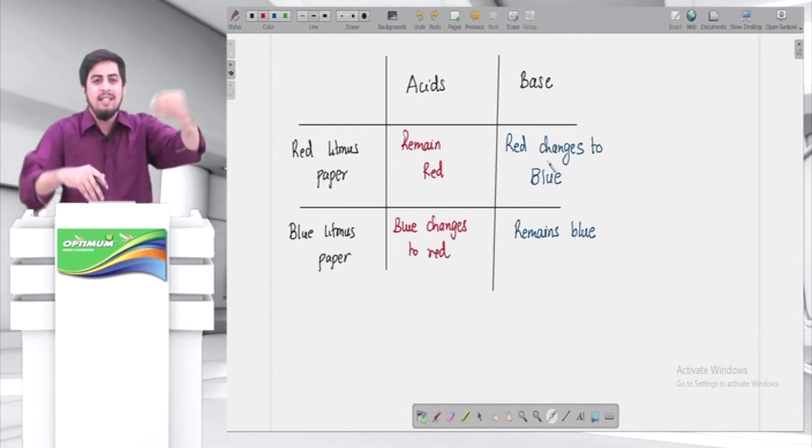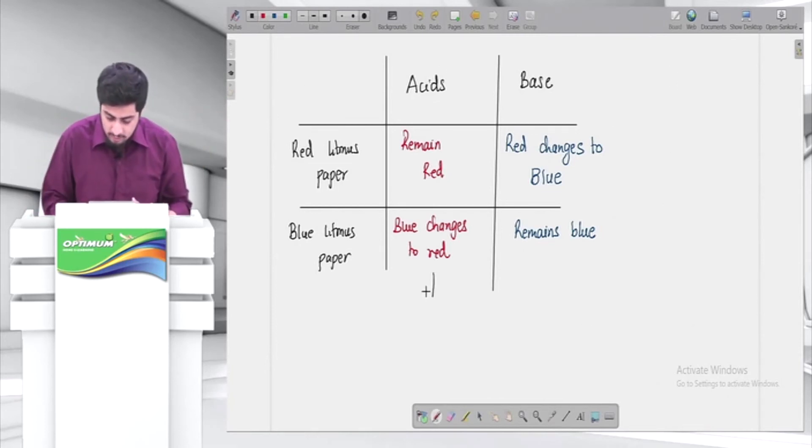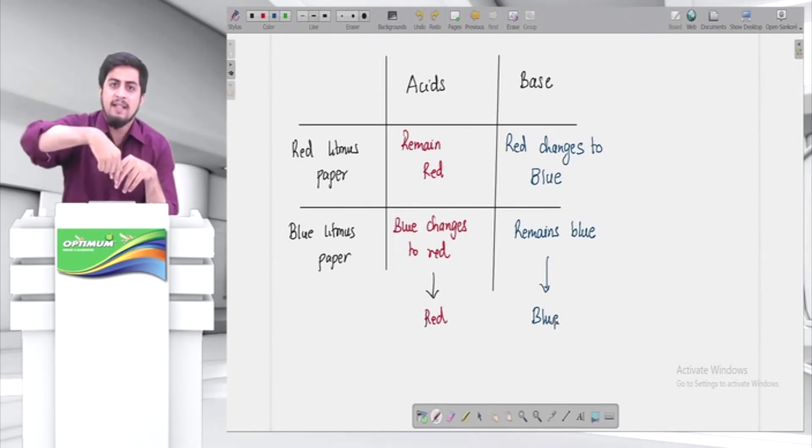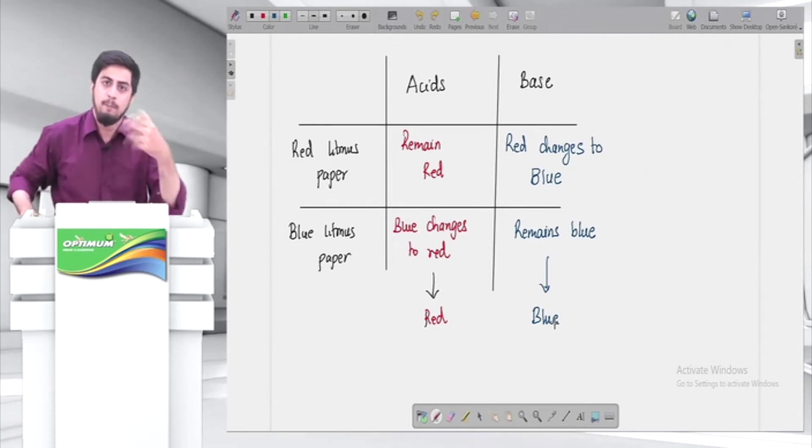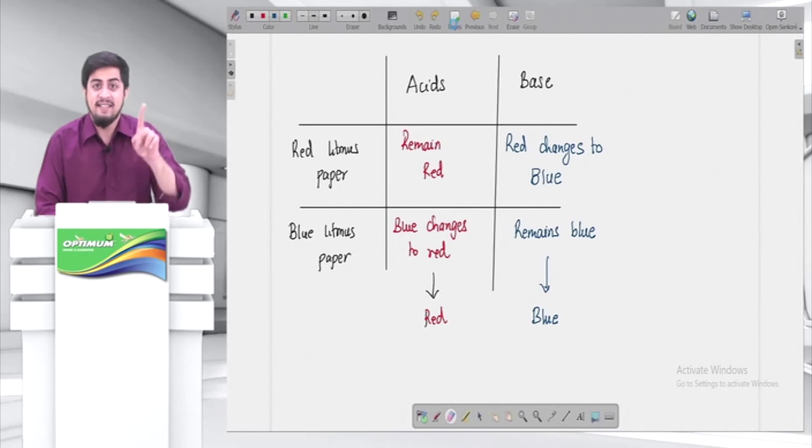That means in general, acid is something that makes litmus paper red. Acid makes litmus paper red. Litmus paper kohi bhi dalo, agar red raha to acid. And base is something that makes it blue. Simple hai - agar litmus paper red raha, it's an acid. Agar litmus paper blue ho gaya, it's a base. So how do you find if something is an acid or not? I'll give you a chemical in a flask and ask you to tell if it's acid or base. How do you know? You can dip litmus paper. Agar red ho gaya to acid hai, or blue ho gaya to base hai. That's the basics we should know about acids and bases.